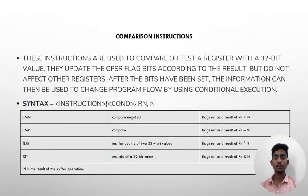Now let us see what are comparison instructions. These instructions are used to compare or test a register with a 32-bit value. They update the CPSR flag bits according to the results but do not affect other registers. After the bits have been set, the information can be used to change program flow by using conditional execution. Syntax: CMN (compare negated), CMP (compare), TEQ (test equality of two 32-bit values), TST (test bits of a 32-bit value).